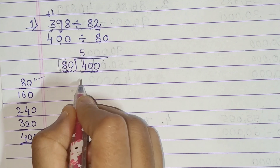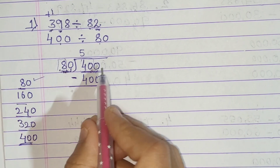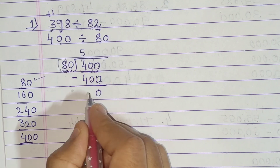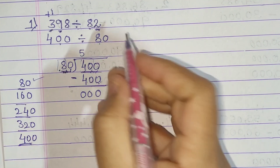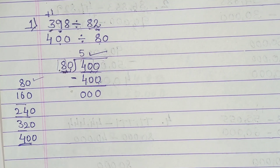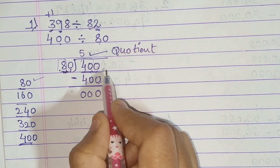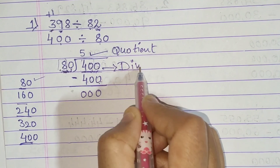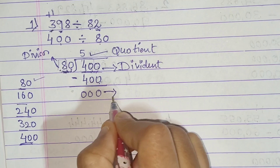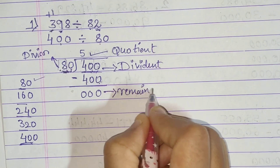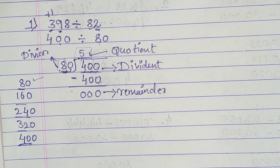So 80 times 5 is 400. We subtract: 400 minus 400 is 0. The quotient is 5. This is called the quotient, 400 is the dividend, 80 is the divisor, and 0 is the remainder.